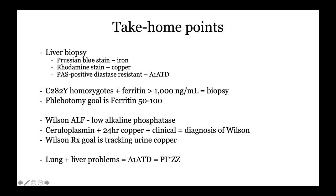Take-home points: when looking at liver biopsy, think of these three stains — Prussian blue for iron, rhodanine for copper, and PAS-positive diastase-resistant for alpha-1-antitrypsin deficiency. For iron: C282Y homozygotes with ferritin above 1,000 need a biopsy; phlebotomy goal is ferritin 50 to 100. For Wilson's acute liver failure: low ALT, ALT-to-T-bili ratio less than 4. Diagnosis uses low ceruloplasmin plus 24-hour urinary copper plus clinical findings, scored by EASL criteria. For Wilson's therapy: when on trientine, urinary copper should be high; when on zinc, it should be low. Lung plus liver problems — think alpha-1-antitrypsin.